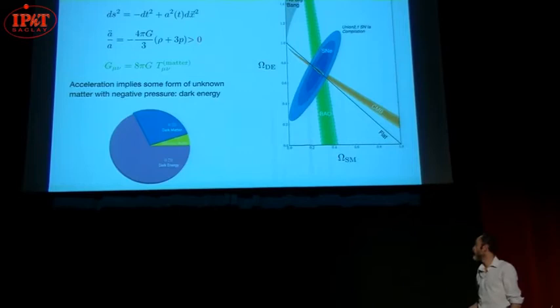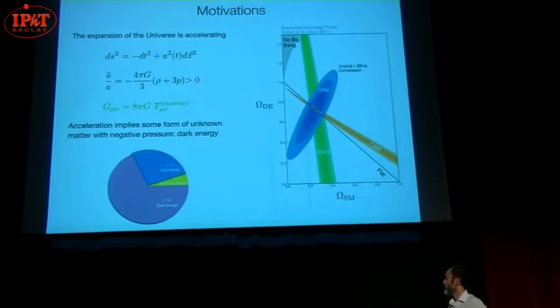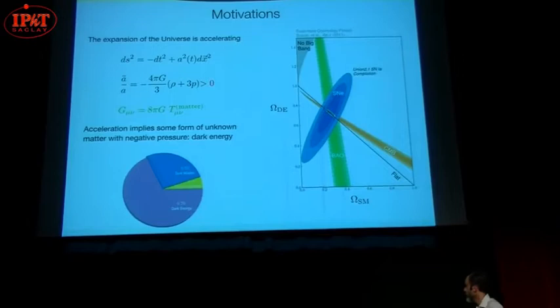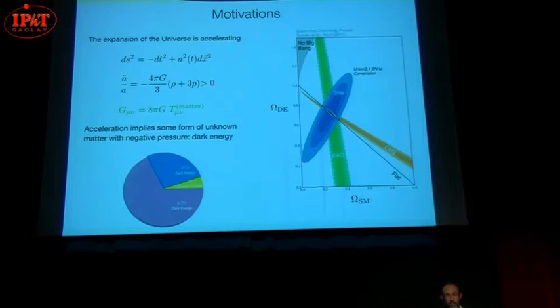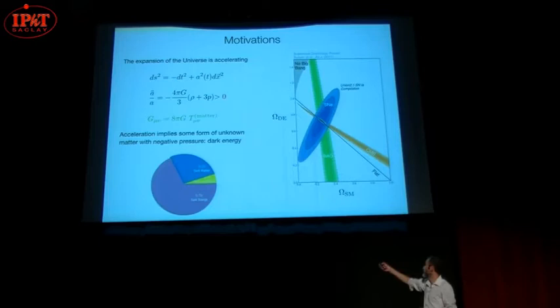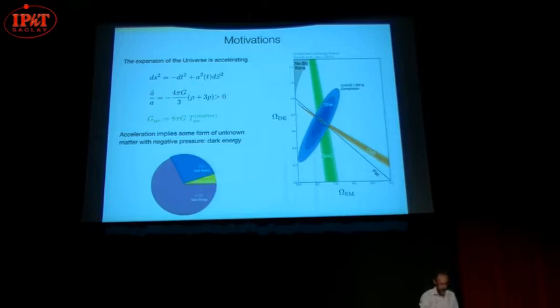Let me give you a brief motivation. 20 years ago we discovered that the expansion of the universe is accelerating, meaning that the average distance between galaxies, described by the scale factor A with a positive second time derivative, is increasing. In order to have that, if you assume Einstein's equations describe this cosmological evolution, we require that the universe is filled by some matter with negative pressure that we call dark energy, which makes up about two-thirds of the total energy density of the universe.